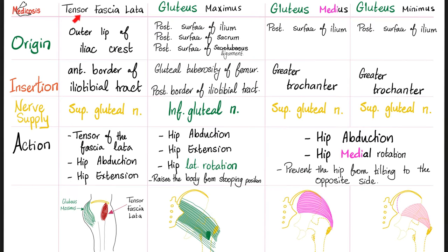Let's talk about these four big muscles: tensor fasciae latae, gluteus maximus — the thickest, biggest skeletal muscle in your entire body — gluteus medius, and gluteus minimus. The gluteus minimus is so deep it is covered by the gluteus medius, which is covered by the gluteus maximus. The origin of the gluteus minimus is the gluteal aspect of the ilium. Gluteus medius also originates from the ilium but takes a bigger area — that's why it covers the gluteus minimus. Gluteus maximus takes an even bigger area, extending beyond the gluteus medius.